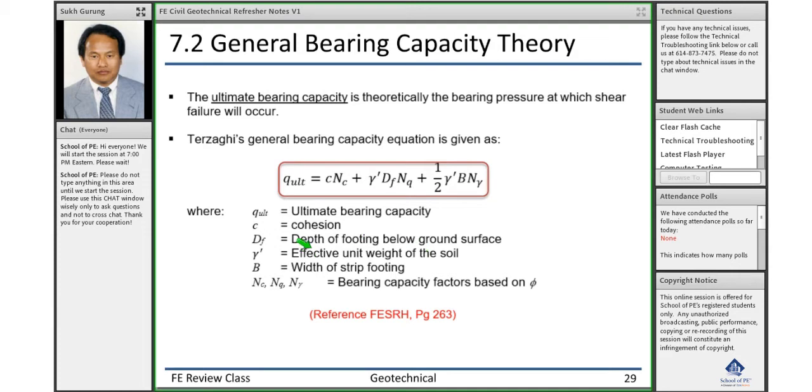Effective unit weight: if you have a water table, then saturated unit weight minus unit weight of water equals effective unit weight. If there is no water table, whatever unit weight is given in your problem, that itself is your effective unit weight, and you will take that unit weight to calculate the bearing capacity.